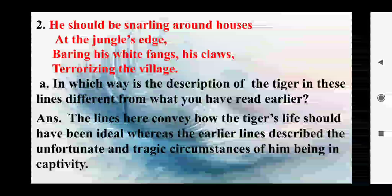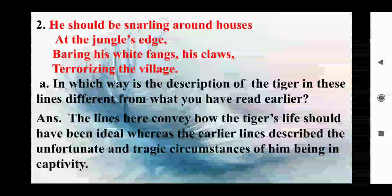Extract 2: 'He should be snarling around houses at the jungle's edge, baring his white fangs, his claws, terrorizing the village.' Part (a): In which way is the description of the tiger in these lines different from what you have read earlier? Answer: The lines here convey how the tiger's life should have been ideal, whereas the earlier lines describe the unfortunate and tragic circumstances of him being in captivity.